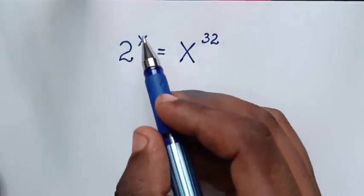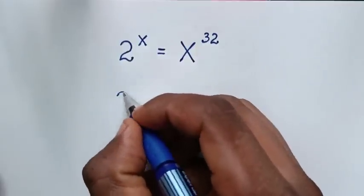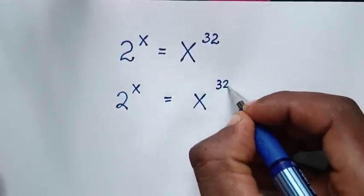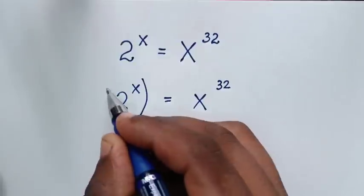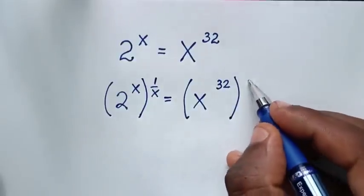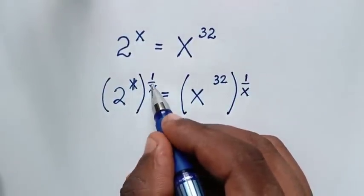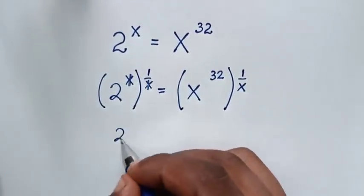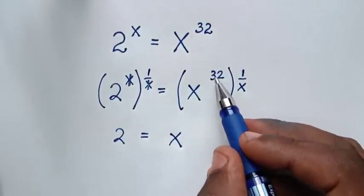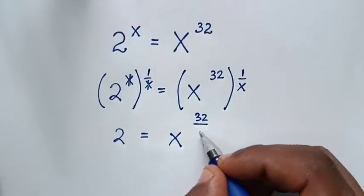In the first step, from 2^x = x^32, we remove the power of x by raising both sides to the power of 1 over x. This cancels the power of x on the left, giving 2 power of 1, which is 2, equal to x power of 32 times 1 over x, which is 32 over x.